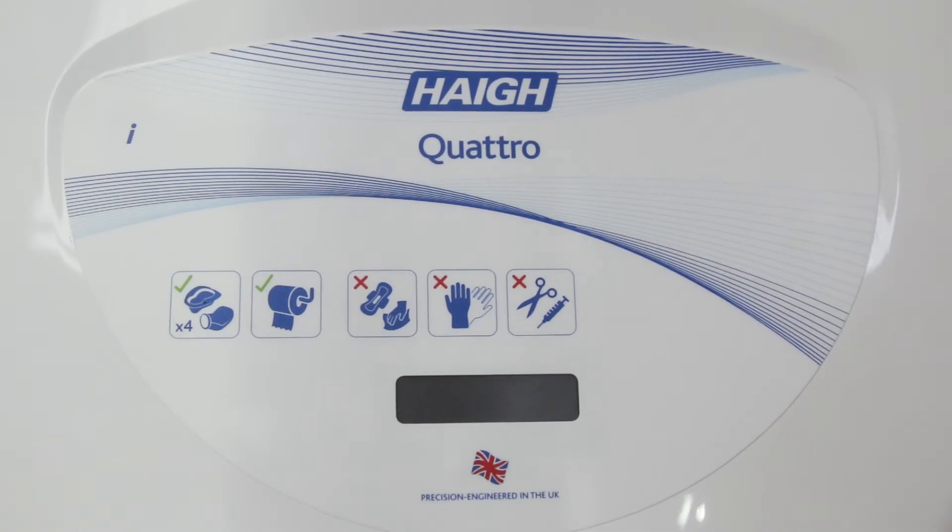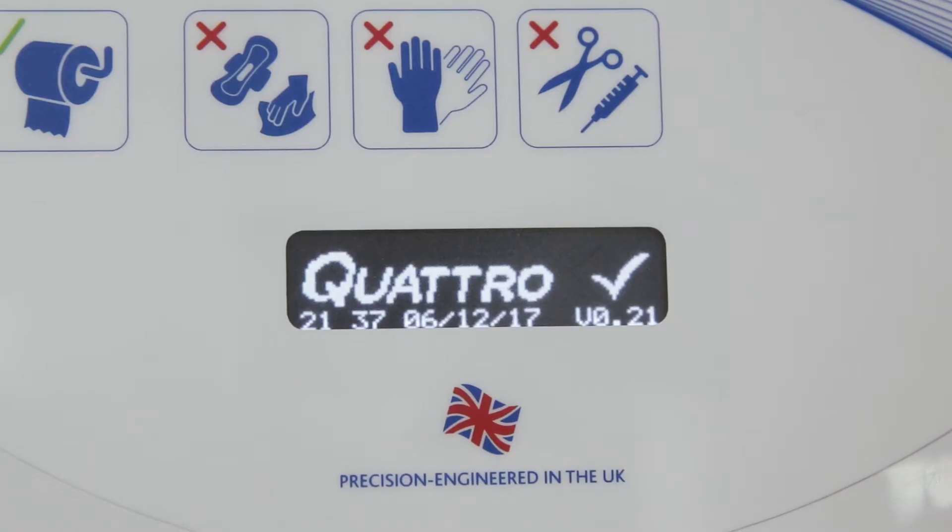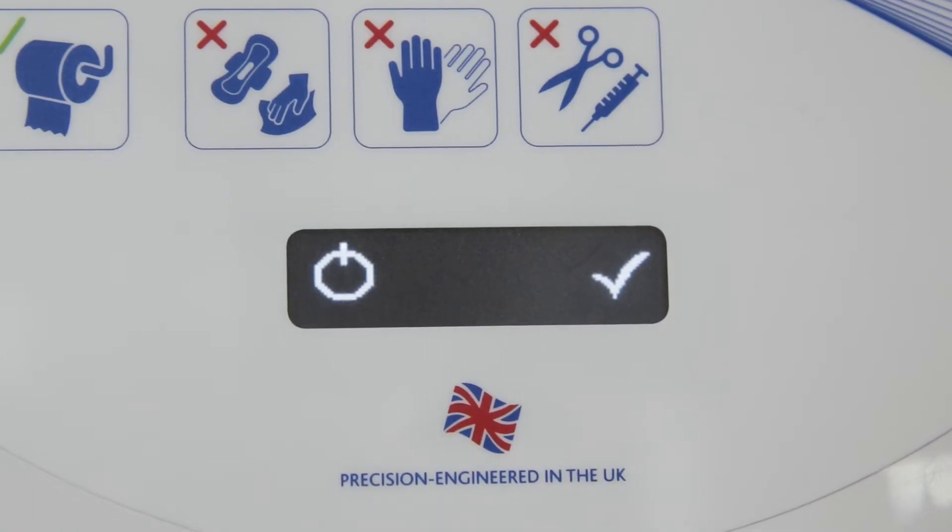When you switch on your macerator, the date and time will be displayed. If this is incorrect, please contact your facilities and estates department so they can correct it.